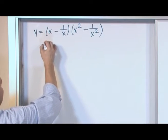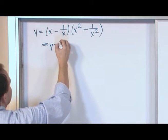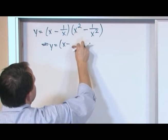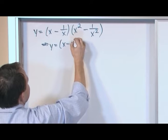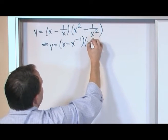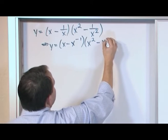So rewrite it as the following. Y equals x minus 1 over x. Well, actually, I don't want to have this 1 over x here. I have x minus x to the negative 1 power times x squared minus x to the negative 2 power.